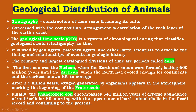Stratigraphy is the construction of time scale and naming its units. It is concerned with the composition, arrangement and correlation of the rock layers of the earth's crust. The Geological Time Scale (GTS) is a system of chronological dating that classifies geological strata — that is, stratigraphy — in time. It is used by geologists, paleontologists and other earth scientists to describe the timing and relationship of events in geologic history.